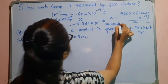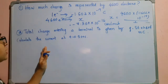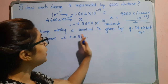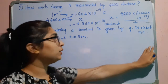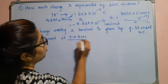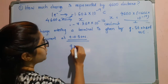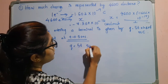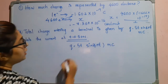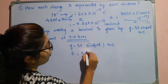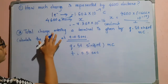So this is the charge represented by 4600 electrons. The next question is: total charge entering a terminal is given by q = 5t·sin(4πt) millicoulomb. Calculate the current at t = 0.5 seconds. The given data is q = 5t·sin(4πt) mC, and time t = 0.5 seconds. They are asking what is the total current.